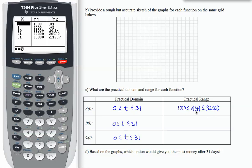So here's my practical range for function A. A(t) is greater than or equal to 1,000, less than or equal to 32,000. Those are all the values taken on by the output for function A.